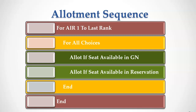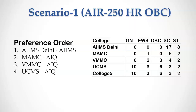I will explain the allotment process in detail using three scenarios. Let's consider the first scenario. The candidate belongs to Haryana OBC category and their All India rank is 250. College preferences of the candidate are given on the left hand side, and the current seat status is given on the right hand side.